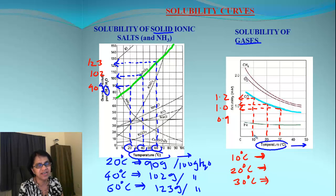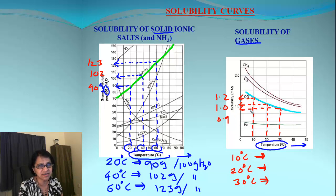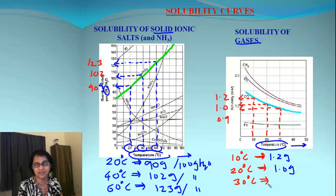Let's do the same thing for gases. I'm selecting CO2. From temperatures 10, 20, and 30 degrees, I go up until it touches the graph and then across to the y-axis. At 10°C we get 1.2 grams; at 20°C it is 1.0 grams; and at 30°C it is roughly 0.9 grams.